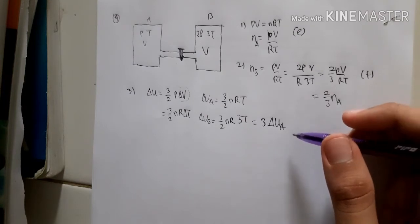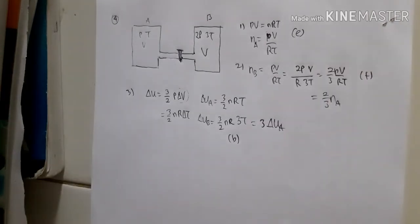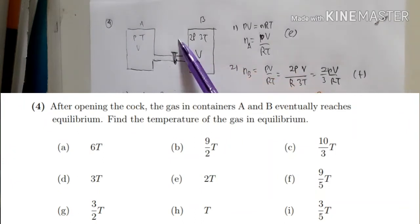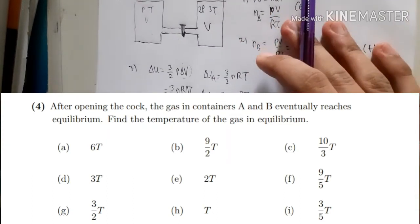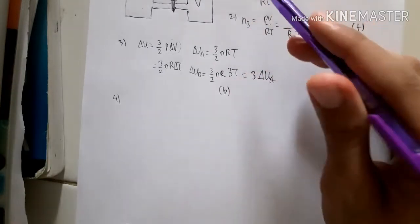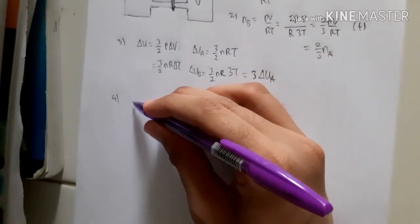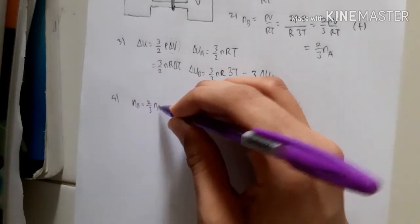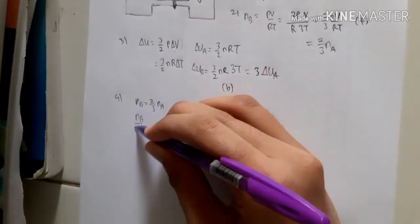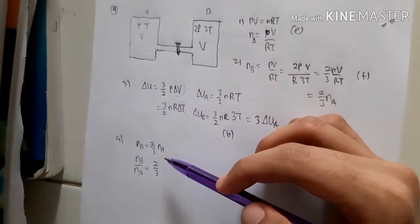For number four, the stopcock is now open and the gases mix. We need to find the equilibrium temperature. The moles in container B are 2/3 of those in container A. Setting the ratio of moles in B to moles in A as 2 to 3, we let n_B = 2x and n_A = 3x.